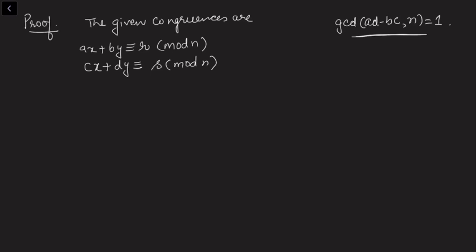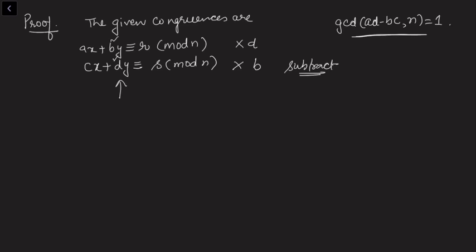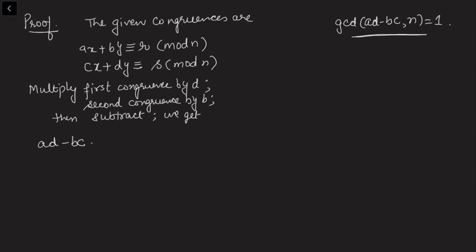This is similar to solving linear equations in two variables where we cancel out one variable and find the solution for the other. To cancel y, we multiply the first congruence by d and the second congruence by b — the respective coefficients — and then subtract. This standard technique is called elimination. Multiplying the first by d and the second by b and subtracting, we get (ad - bc)x ≡ dr - bs (mod n).